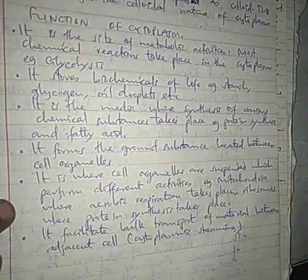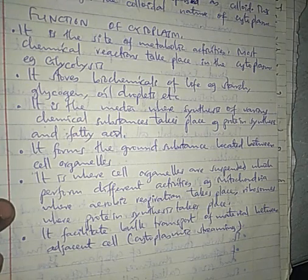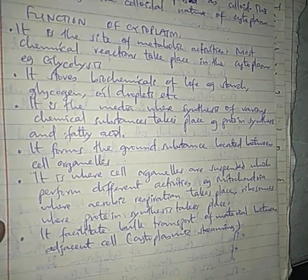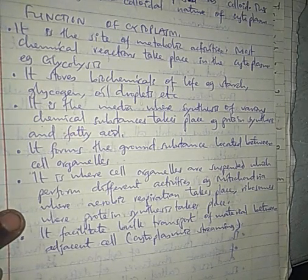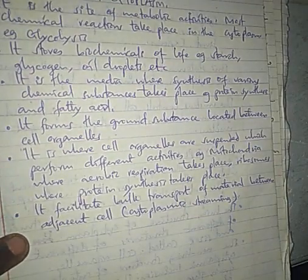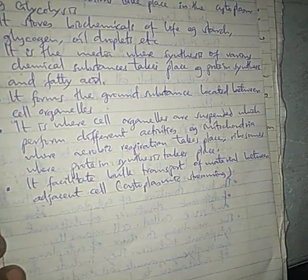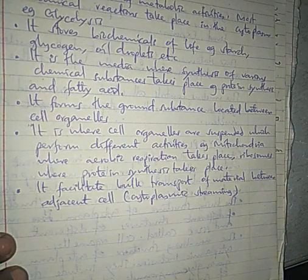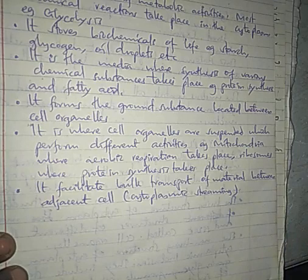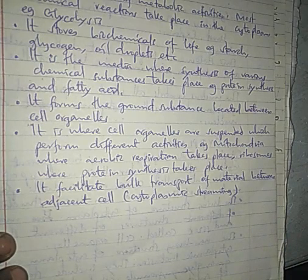Regarding the functions of cytoplasm: it is the site for metabolic activities — different reactions take place in the cytoplasm such as glycolysis. Cytoplasm also stores chemicals of life such as starch, glycogen, and oil droplets. Additionally, cytoplasm is the medium where synthesis of various chemical substances takes place, such as protein synthesis. The process of transcription — from DNA to messenger RNA — takes place in the nucleus, but translation — from messenger RNA to protein chain — takes place in the cytoplasm.